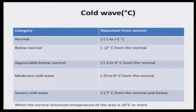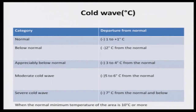Cold wave is also very important. When the normal temperature of the area is 10 degrees centigrade or more, this scale can be applied. A severe cold wave means the temperature goes below the normal by minus 7 degrees centigrade. For example, if the ruling normal is 20 degrees centigrade and the temperature drops to 13 degrees centigrade, a severe cold wave prevails. This must be carefully considered for agricultural planning.